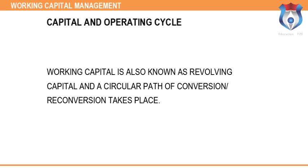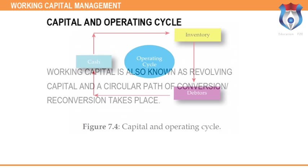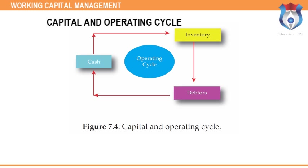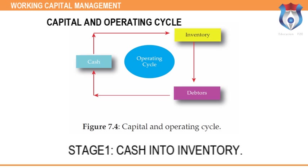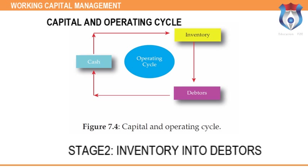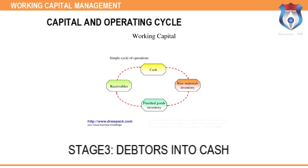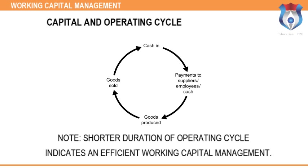Capital and operating cycle: Working capital is also known as revolving capital, as a circular path of conversion and reconversion takes place — this revolution is called the operating cycle. It refers to the cycle of events: Stage 1 — conversion of cash into inventory (cash into raw materials, then work in progress, then finished goods); Stage 2 — conversion of inventory into debtors upon credit sales; Stage 3 — conversion of debtors into cash when payment is made. Stage 4: a shorter duration of operating cycle indicates efficient working capital management.